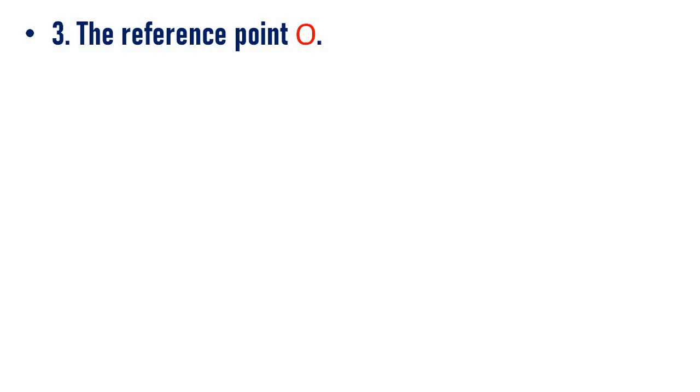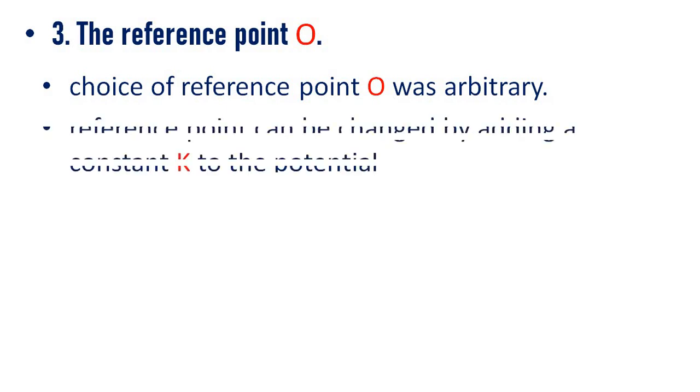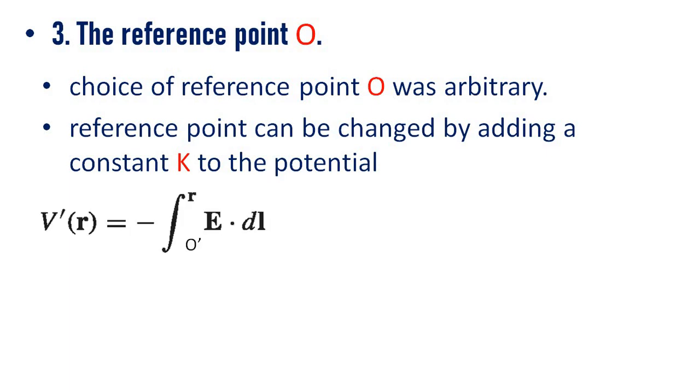The reference point O. Choice of the reference point is arbitrary. A reference point can be changed by adding a constant k to the potential. We know the equation for potential as V of r equal to minus integral O to r E dot dl. At that time we consider the reference point as O.